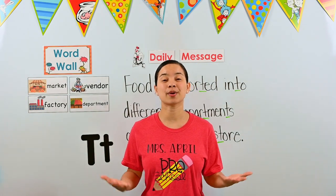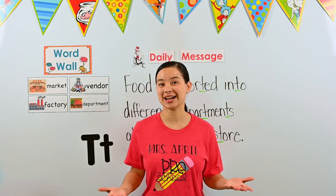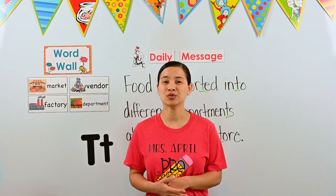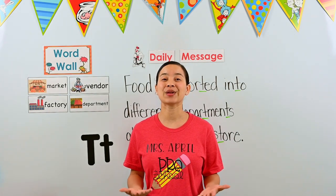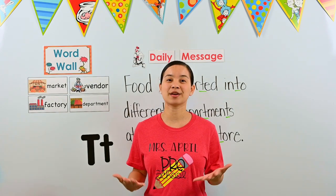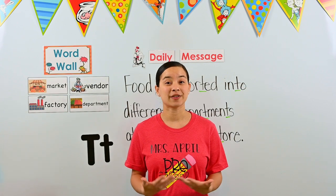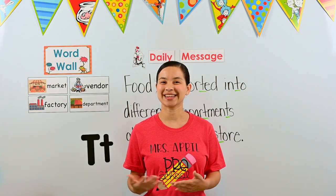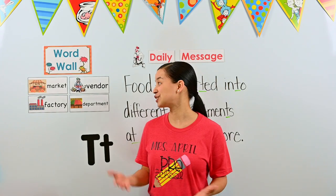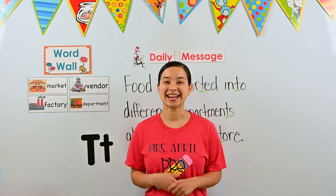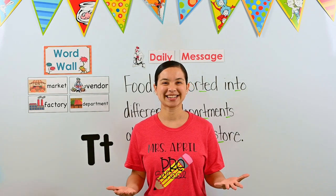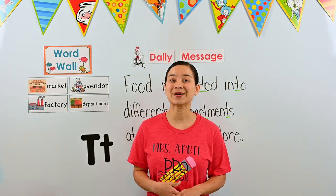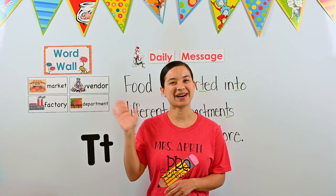Grocery stores put foods in different departments because it makes it easier for us to find things. If different types of food were just scattered everywhere, it would be very difficult to shop. Being organized is very important in stores — it helps people find what they need quickly. We've learned so many things about the market this week. Next week we're going to talk about even more things dealing with the market, so make sure you come back next week for Circle Time. Bye!